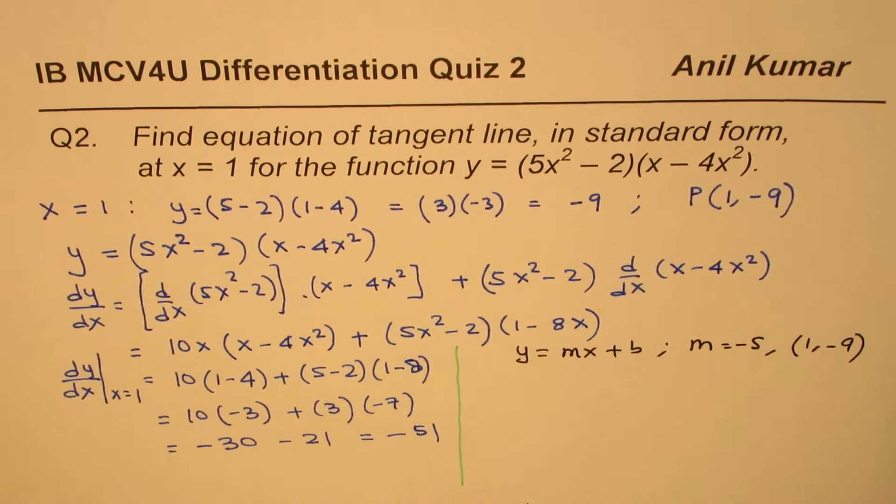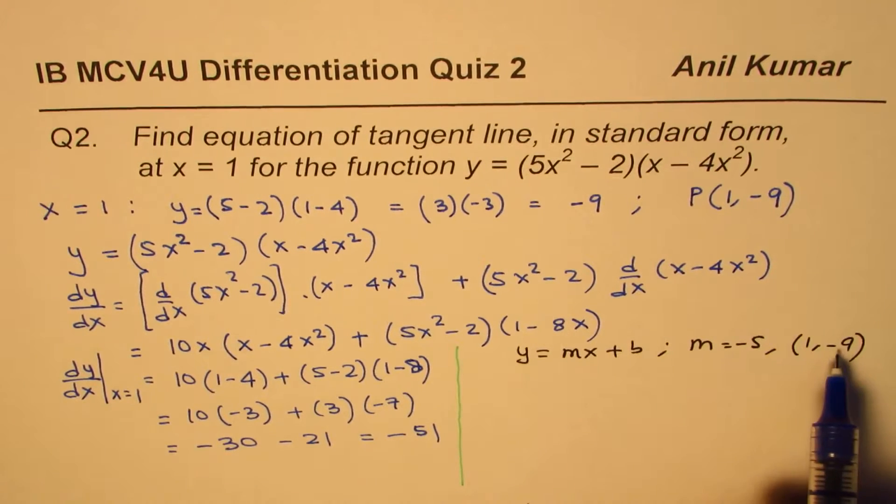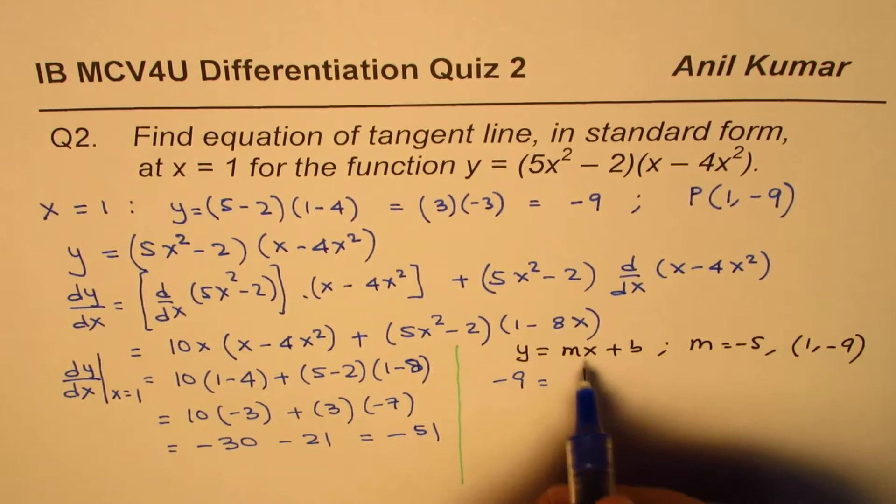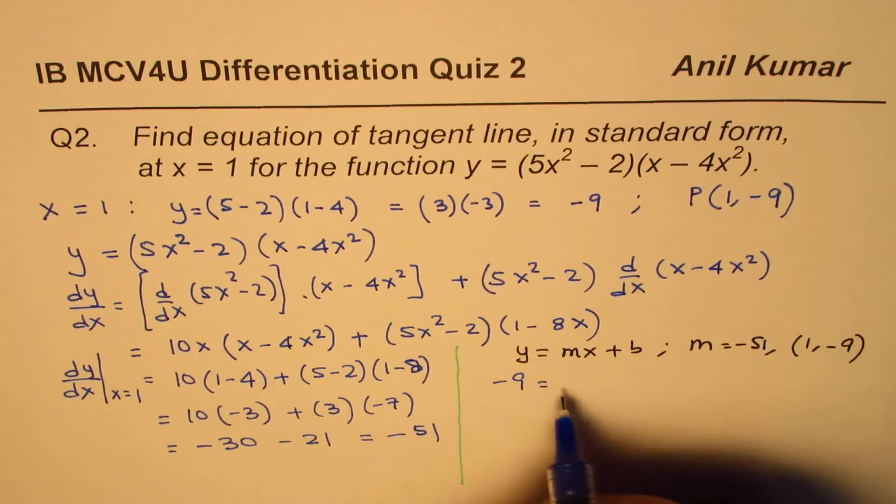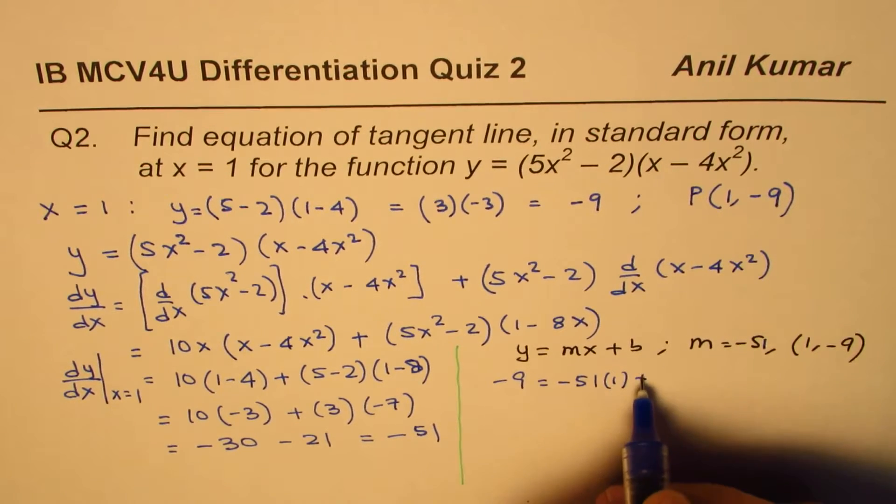So if I substitute 1 for x, y minus 9, m minus 51, we have minus 51, x is 1 for us, plus b.